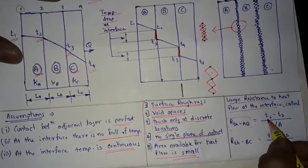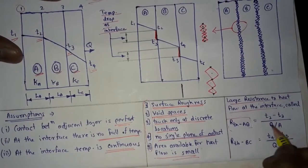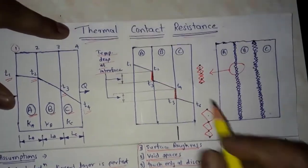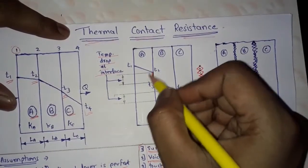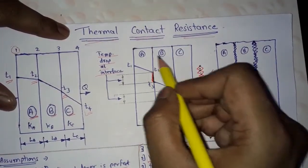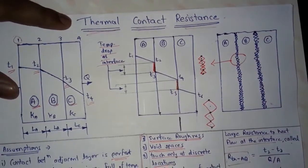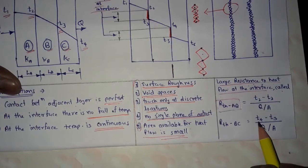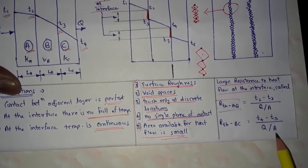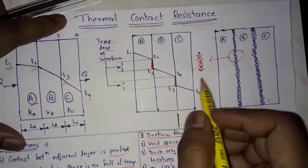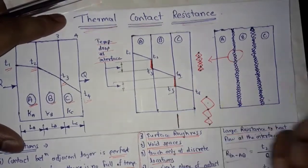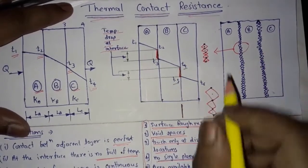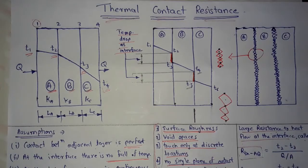The thermal contact resistance is given by: R_th(AB) = (T2 − T3) / (q/A), for the interface between walls A and B. Similarly, R_th(BC) = (T4 − T5) / (q/A), for the interface between walls B and C.